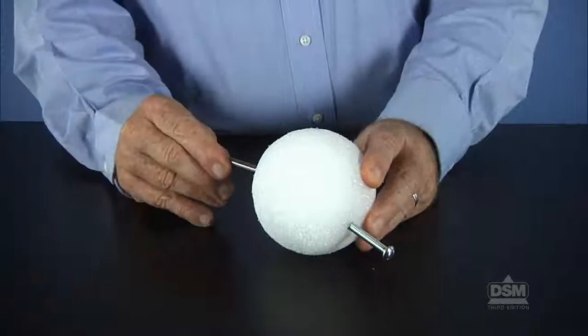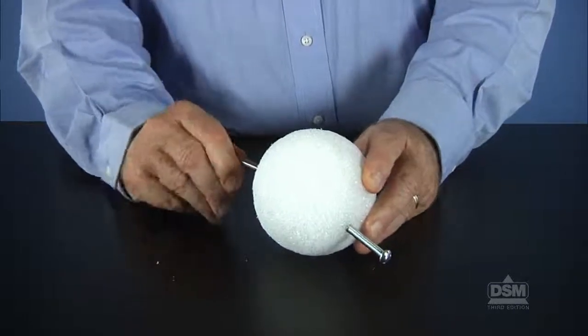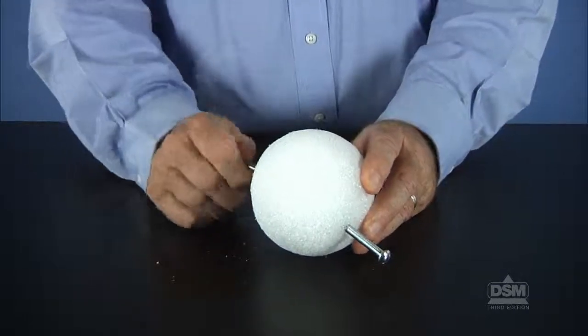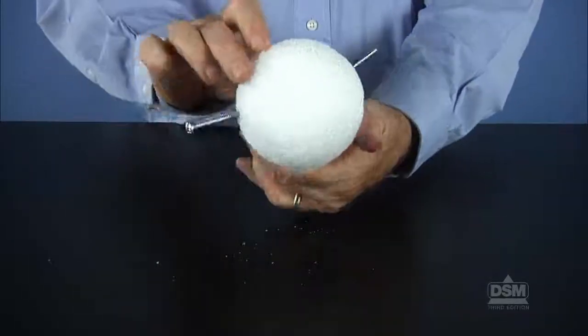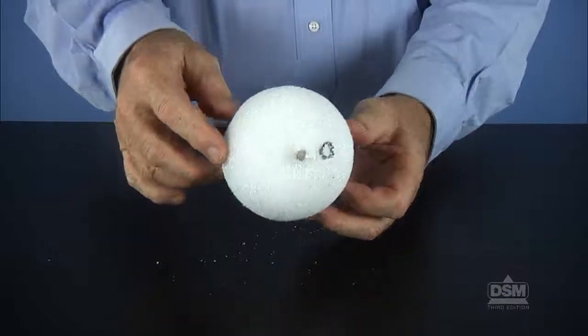Then push the rod magnet three quarters of the way through the ball, starting near, but not on, the geographic north pole, and at a slight angle to the north and south poles. The rod magnet will represent the magnetic north and magnetic south poles of Earth.